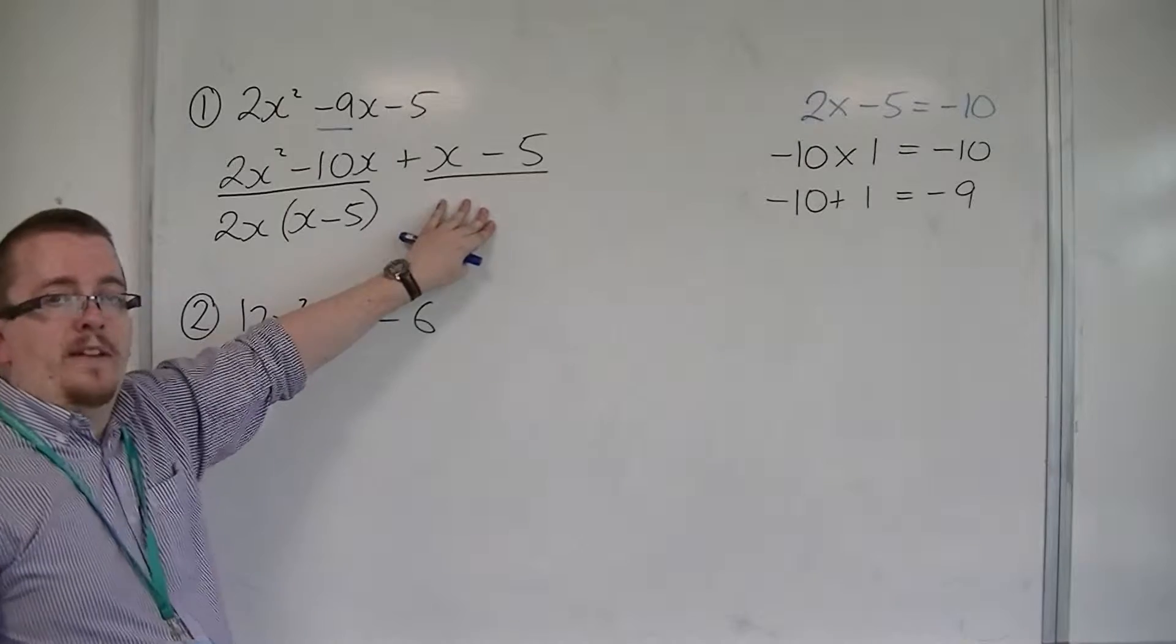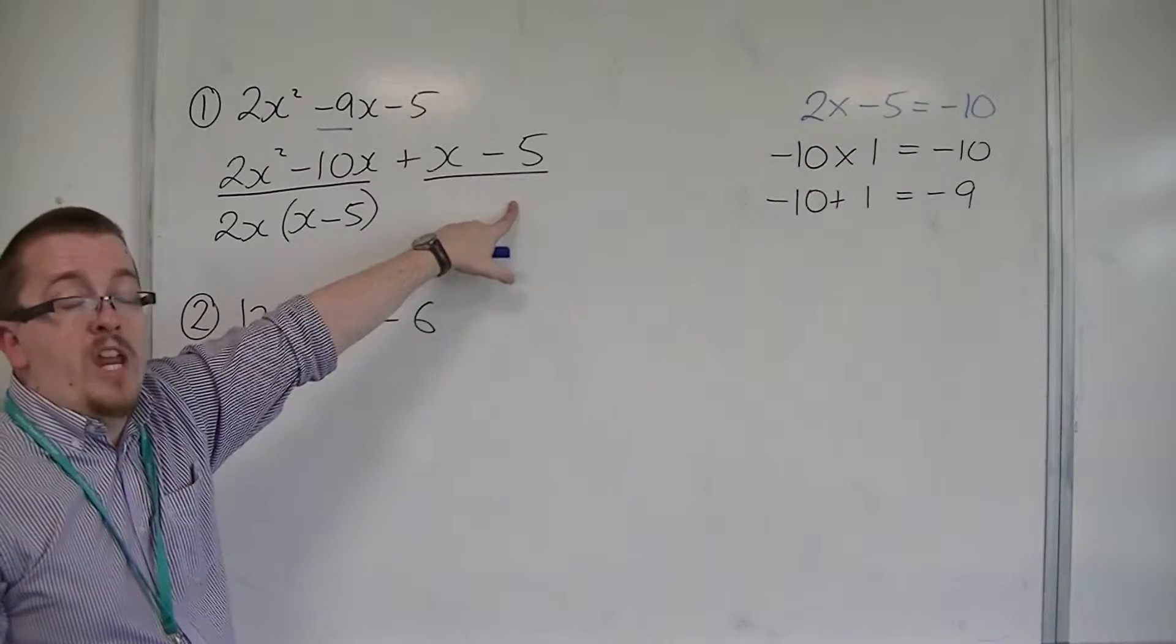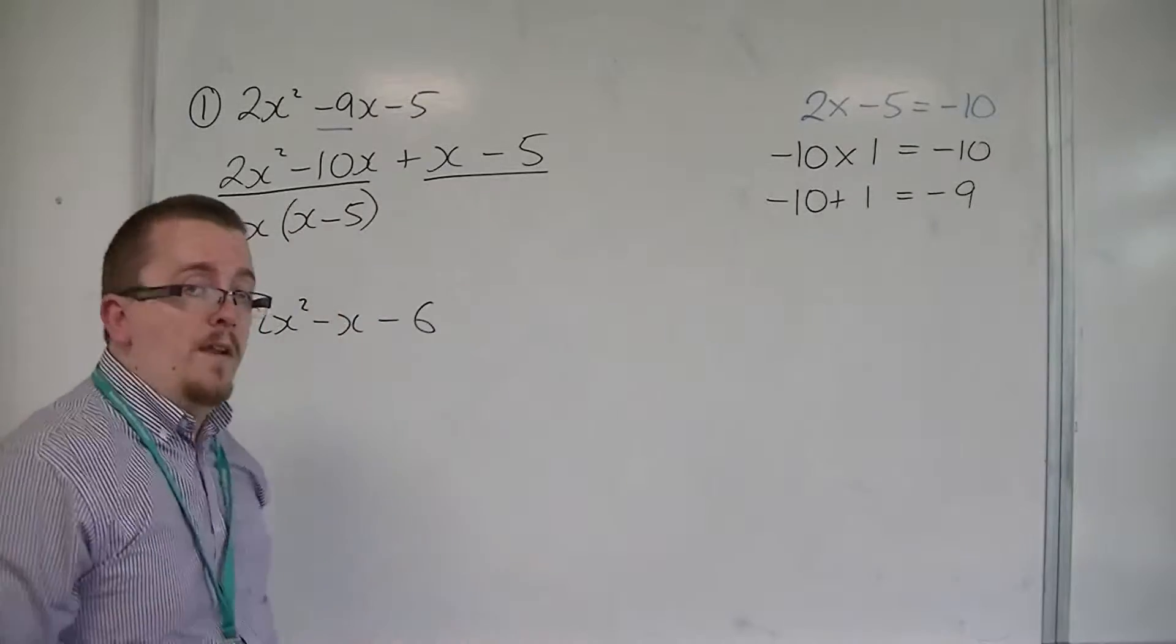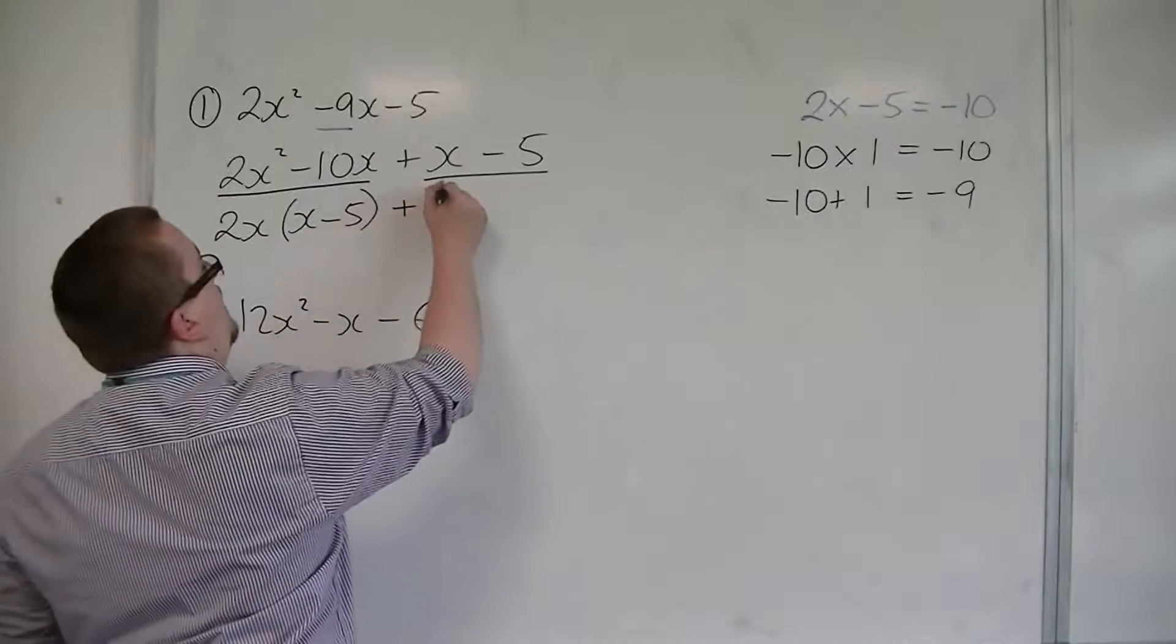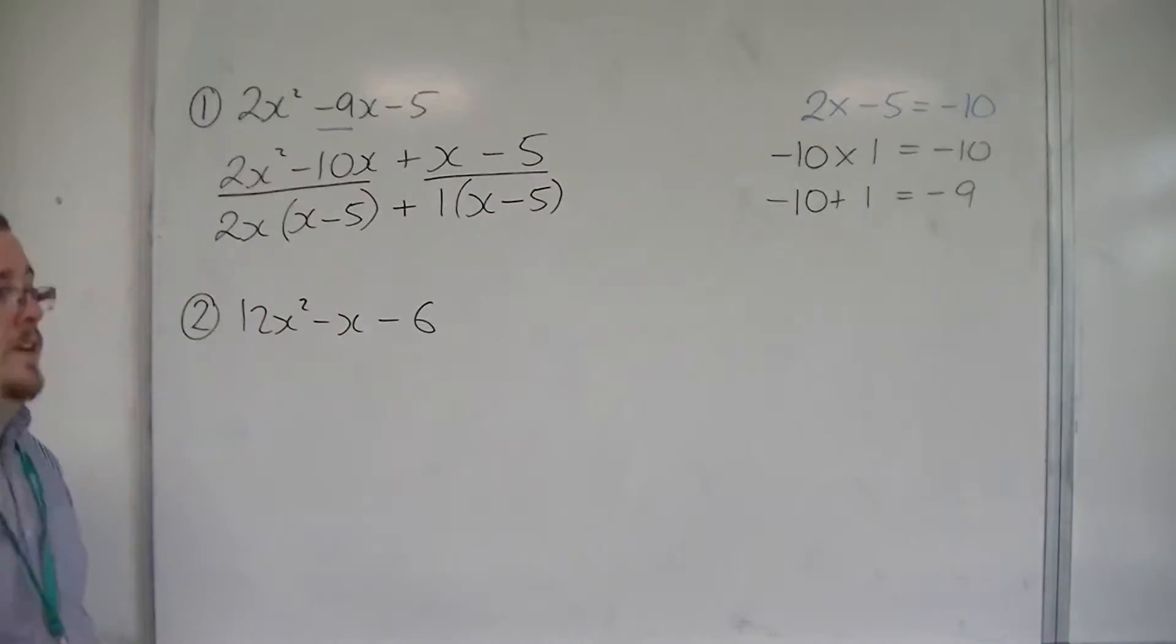Then I want to factorise the second half. Now, because x and minus 5 don't share any factors apart from 1, 1 is the only factor that I can bring out of a bracket. And so this is 1 lot of x minus 5.